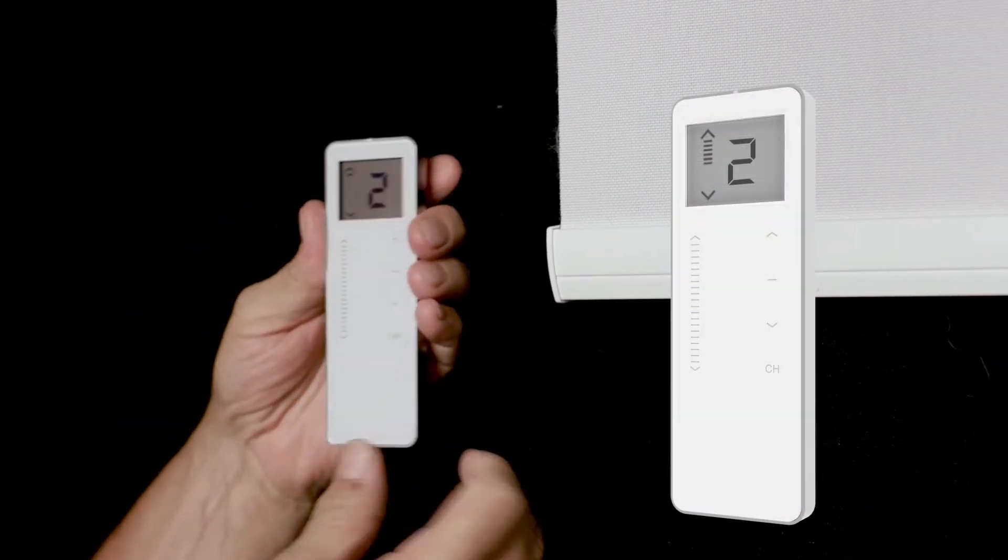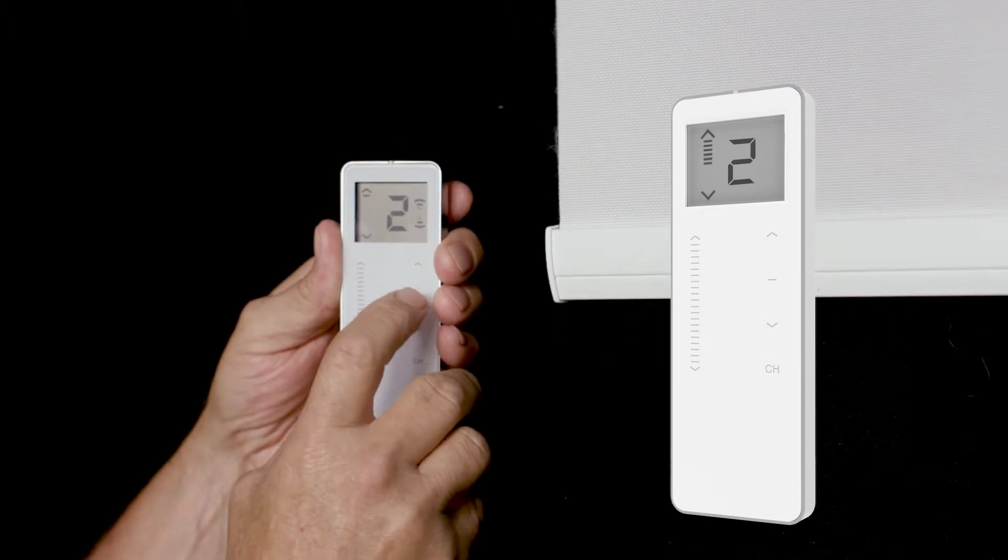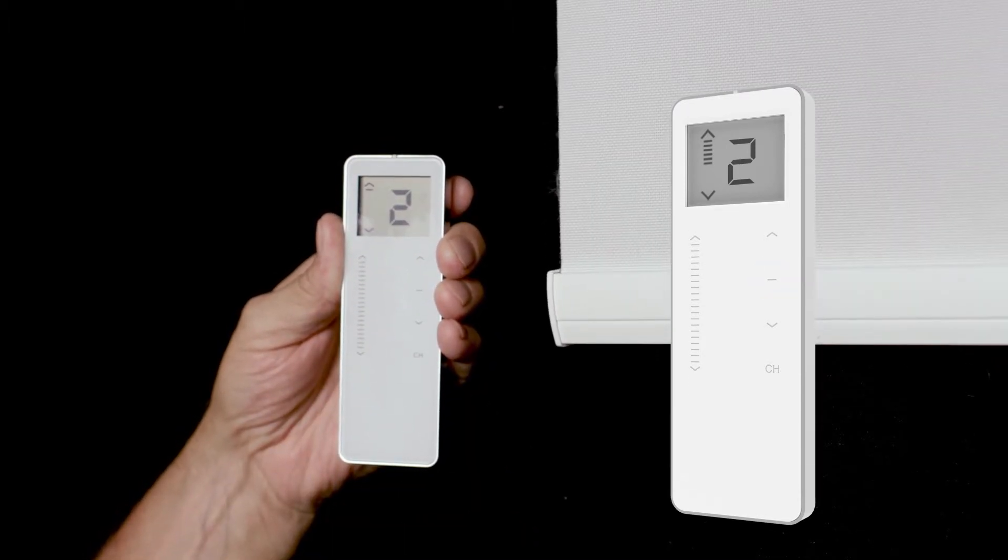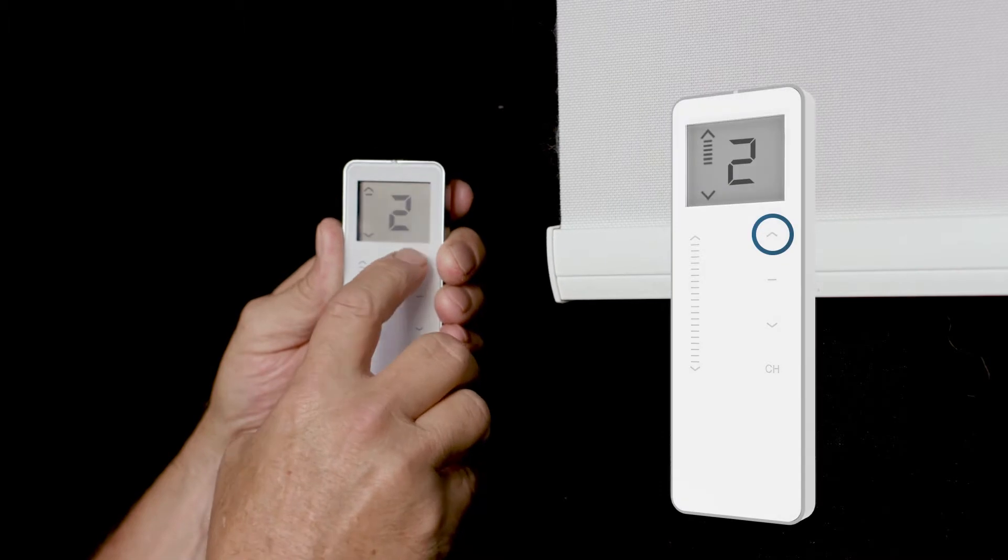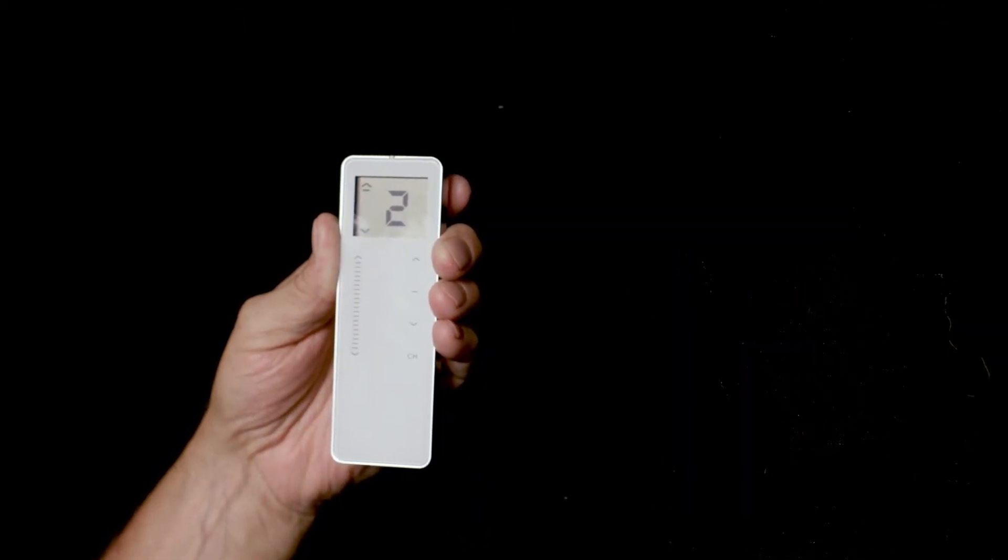Press the stop button, and the shade will jog once. Press stop again, and the shade will jog twice. The favorite position is now set.